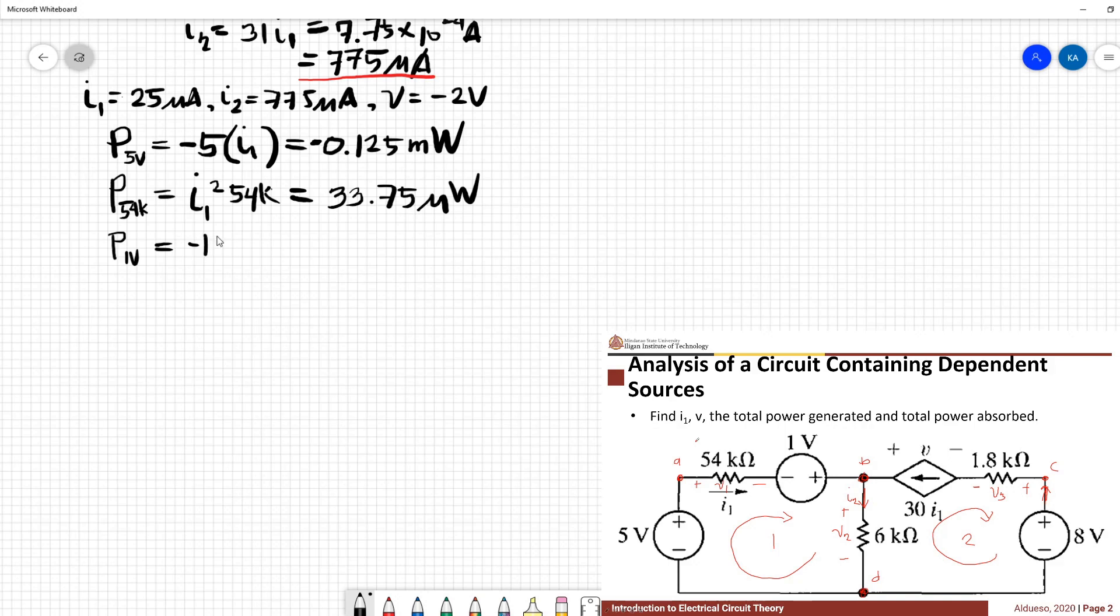Next, for this 1 volt voltage source, we have 1 times i1, so this is equivalent to negative 25 microwatts. The power across the 6k resistor is i2 squared times 6k. We have 3.64 microwatts.